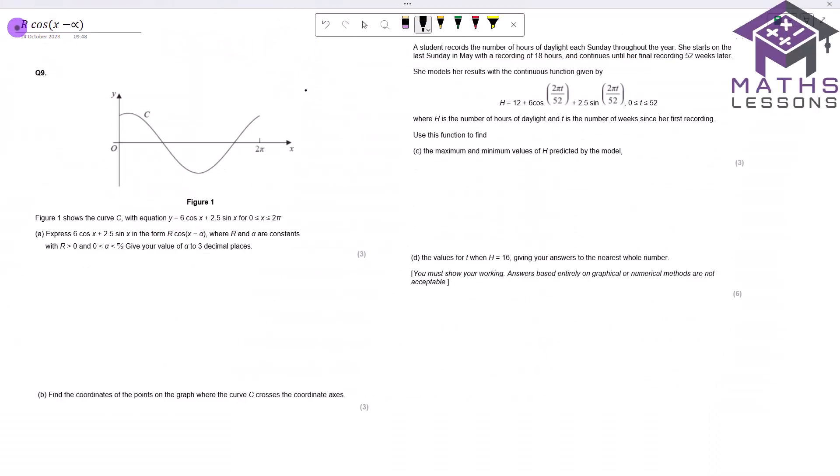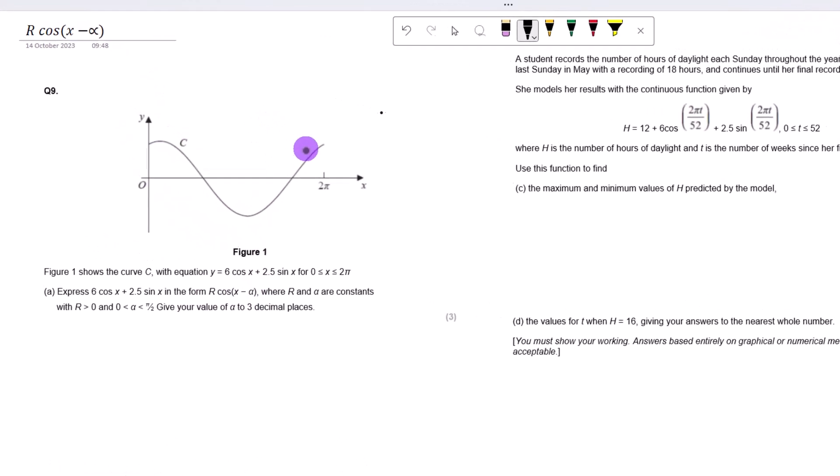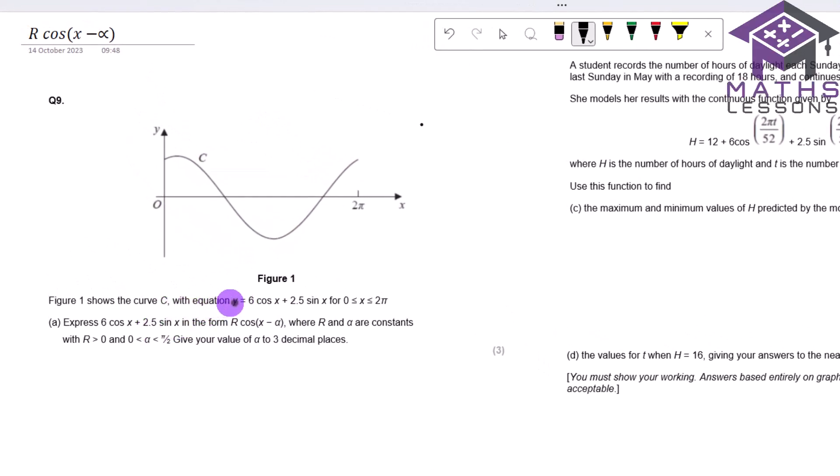All right, here we go. We have a question from a recent test I've given to my upper 6 class, r cos x minus alpha type question. We have this curve and it shows you the equation y equals 6 cos x plus 2.5 sin x between 0 and 2 pi.